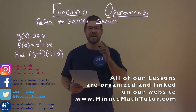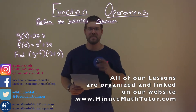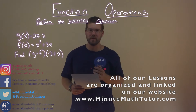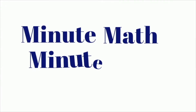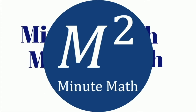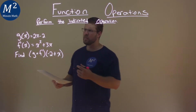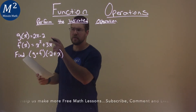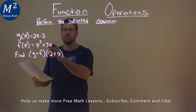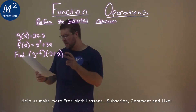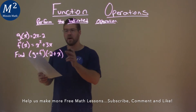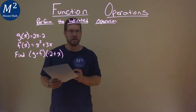Hi, I'm Sean Gannon, and this is Minute Math, and today we're learning about function operations. We're given this problem right here. G of x is equal to 2x minus 2. F of x is equal to x squared plus 3x, and we need to find g of f of negative 2 plus x.